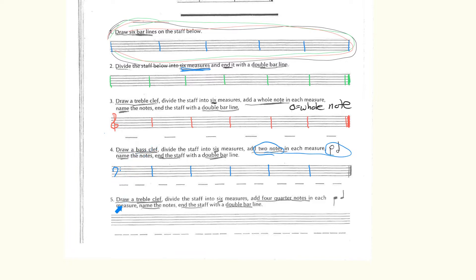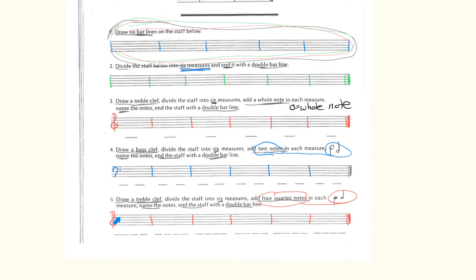The last exercise: draw a treble clef, divide into six measures, and add four quarter notes in each measure. There are two examples shown because the stem direction depends on position — if the note is on or above the third line, the stem goes down on the left; if it's below the third line, the stem goes up on the right. Same rule applies to half notes. Name all the notes and end with a double bar line. That's it for lesson six.